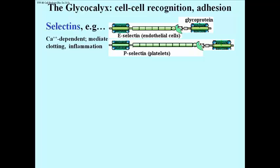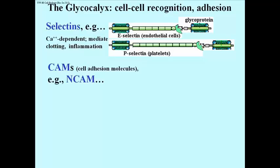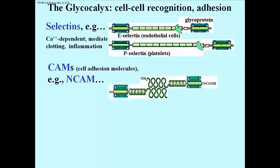Then we have CAMs, or cell adhesion molecules. The first ones, and perhaps most well known, are neural CAMs, or neural cell adhesion molecules, called N-CAMs for short. What you saw was the appearance of two of them on two different cells, coming together by virtue of the amino terminal domains at the end of each. This association doesn't depend on calcium.